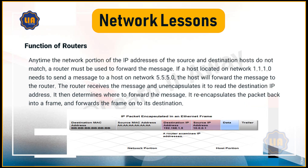Anytime the network portion of the IP addresses of the source and destination hosts do not match, a router must be used to forward the message. If a host located on network 1.1.1.0 needs to send a message to a host on network 5.5.5.0, the host will forward the message to the router. The router receives the message and unencapsulates it to read the destination IP address, then determines where to forward the message, re-encapsulates the packet back into a frame, and forwards the frame onto its destination.